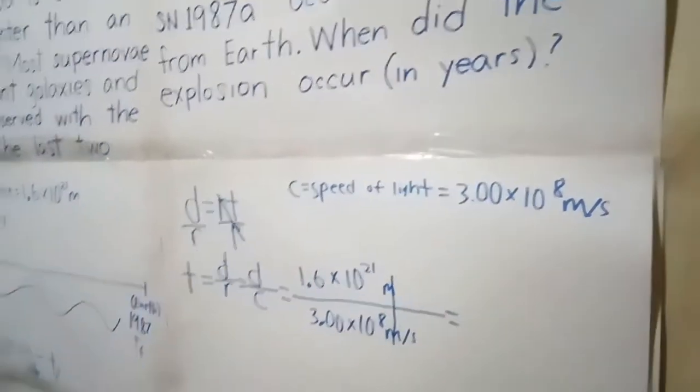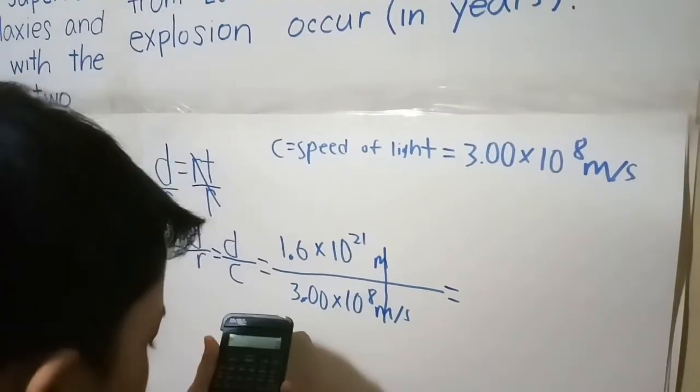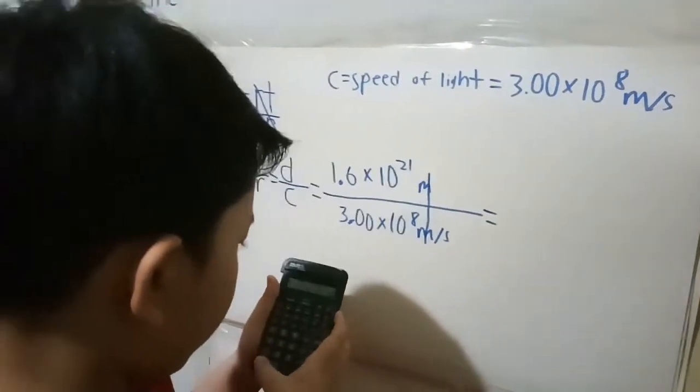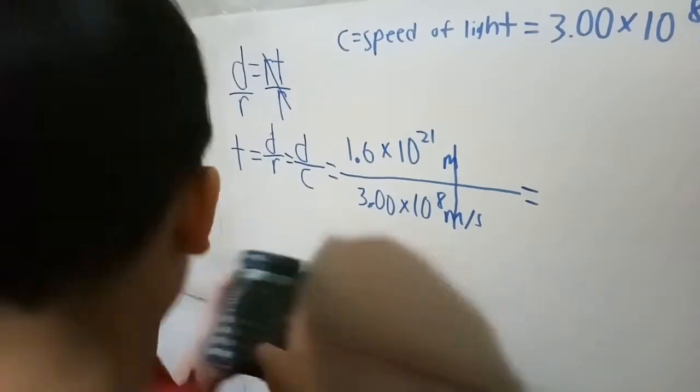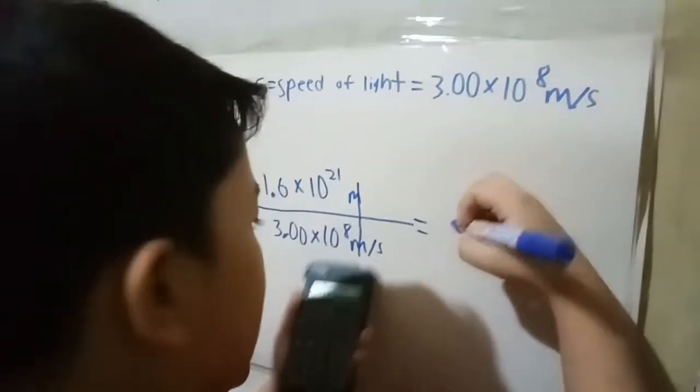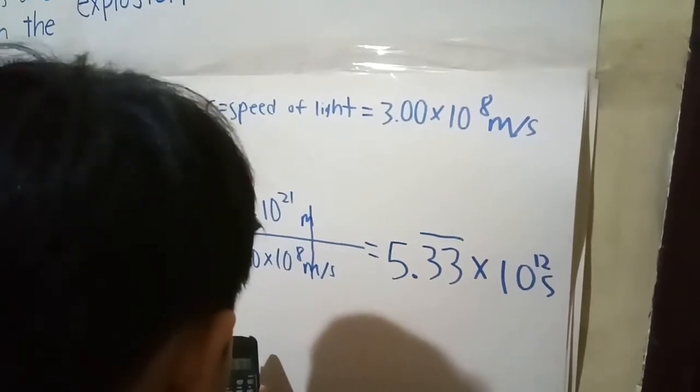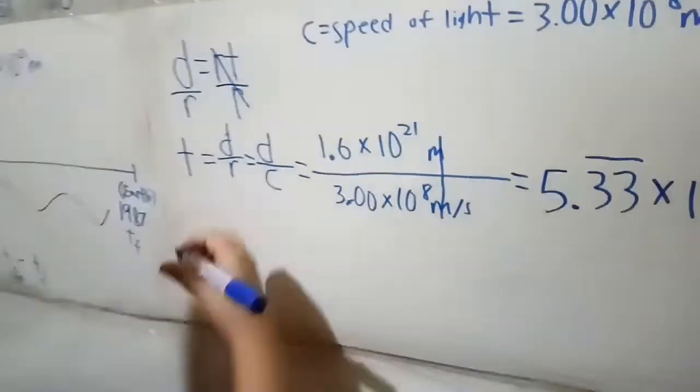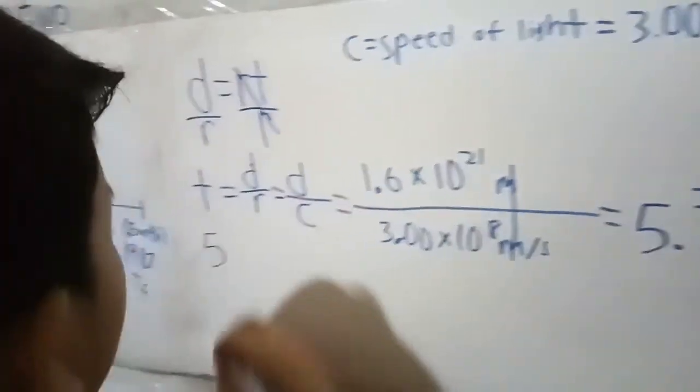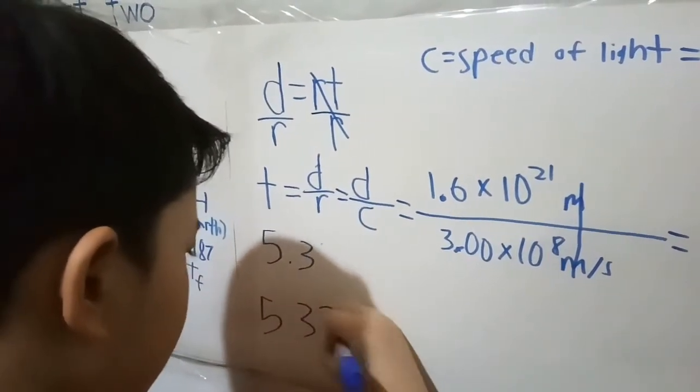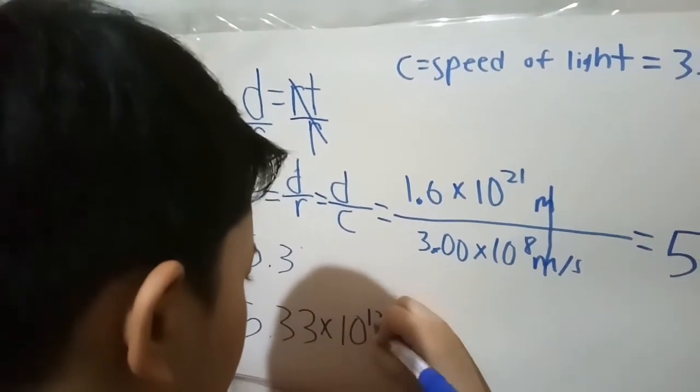1.6 divided by 3.00 equals 5.33 times 10 to the 12th power seconds. We're going to convert this into years, not seconds. 5.33 times 10 to the 12th power seconds.